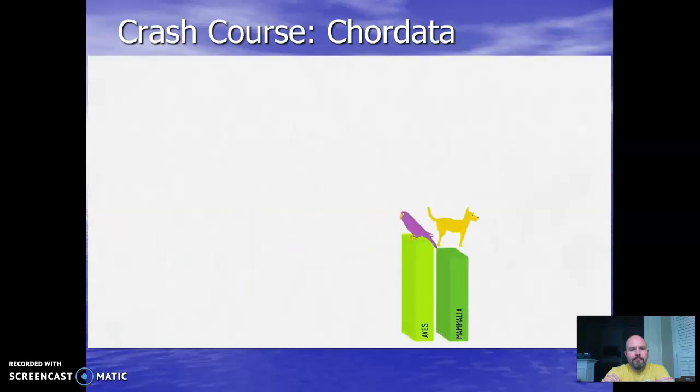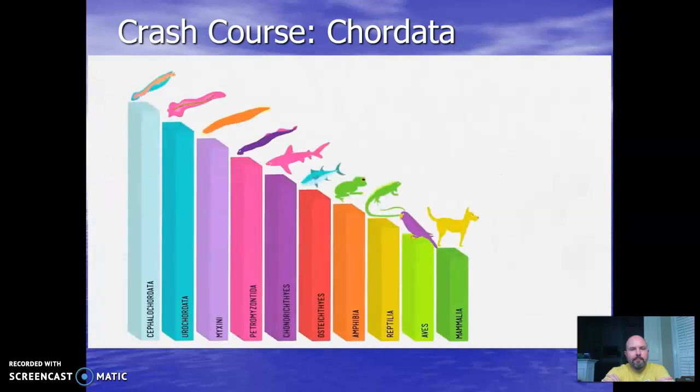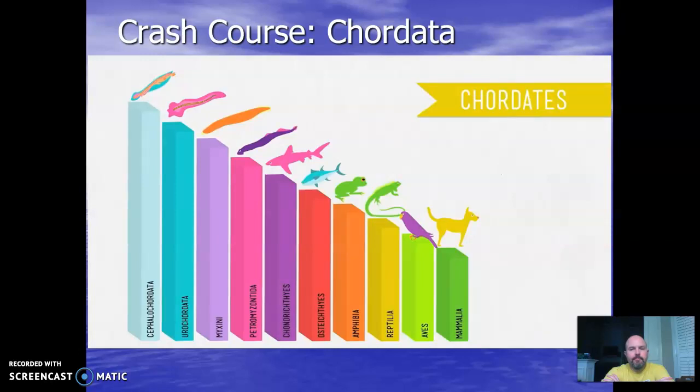Phylum Chordata accounts for all 52,000 species of vertebrates on earth and several thousand species of invertebrates. Together, they range from tiny brainless filter feeders all the way up to Scarlett Johansson. When we talk about classifying animals, we're really talking about their shared ancestry, with each new branch on the tree marking an important evolutionary milestone.